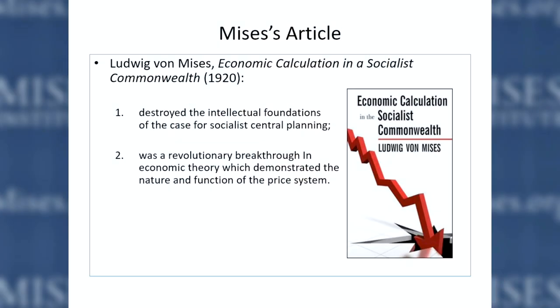So calculation is still important, even though we don't have revolutionary Marxists anymore. The progressives want to use mass democracy to transform the market economy and to implement several goals, including and especially egalitarianism. The most important economics article written in the 20th century, I think, was the article by Ludwig von Mises, "Economic Calculation in the Socialist Commonwealth."